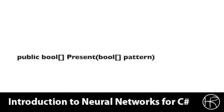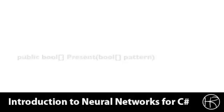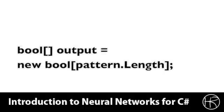Let's see how to present a pattern to the Hopfield neural network. You can see the signature for the Present method here. You pass in a Boolean array that is the pattern, and it returns a Boolean array that is the pattern that resulted from the Hopfield neural network. The Present method creates an output buffer to hold the pattern that is going to be returned. This is the same length as the pattern that was passed in, and you can see this array being allocated here.